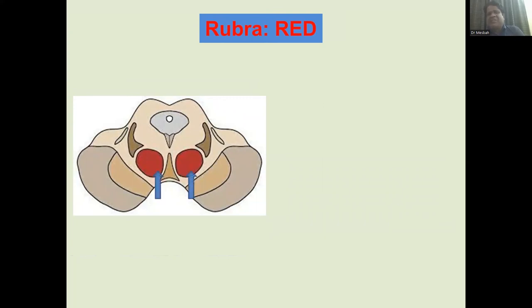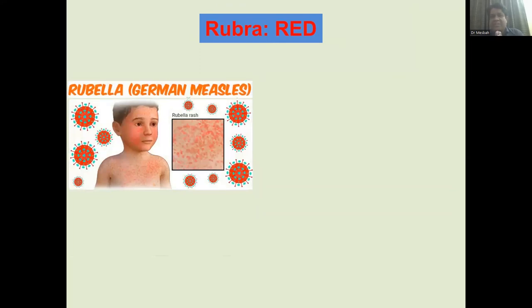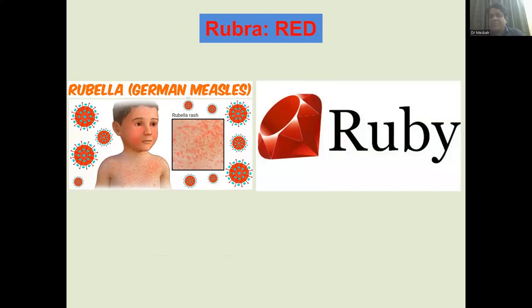Fibers associated with the red nucleus are termed 'rubro-,' as in the 'rubrospinal tract,' which runs from the red nucleus to the spinal cord. The virus 'rubella,' also called German measles, takes its name from 'rubra' meaning red, because it causes a reddish rash on the skin. The gemstone 'ruby' shares the same root — red — because it is a red stone.